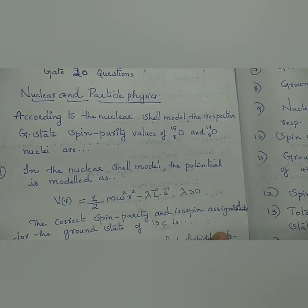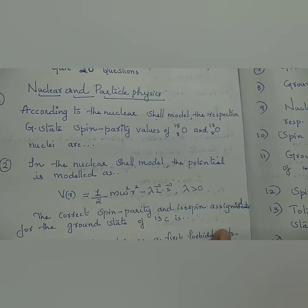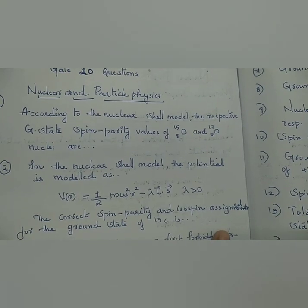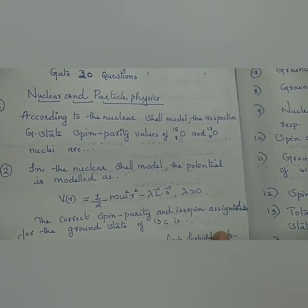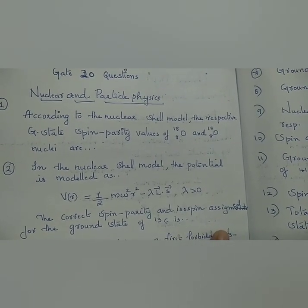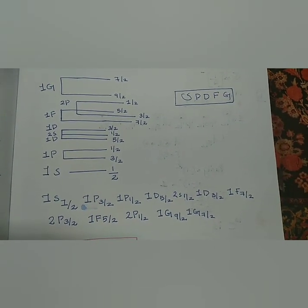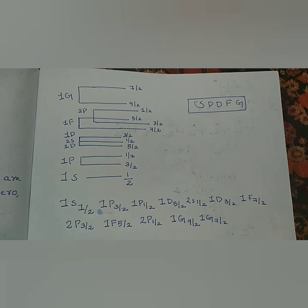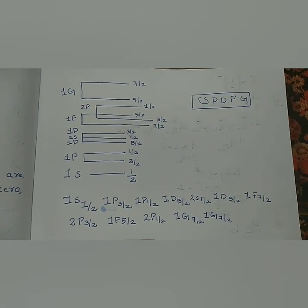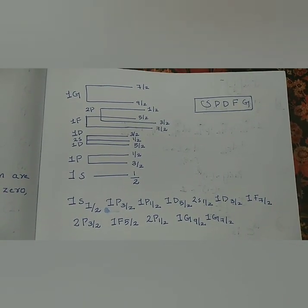According to nuclear shell model, the respective ground state spin parity of Oxygen-8-15 and Oxygen-8-17 nuclei are: 1s1/2, 1p3/2, 1p1/2, 1d5/2.